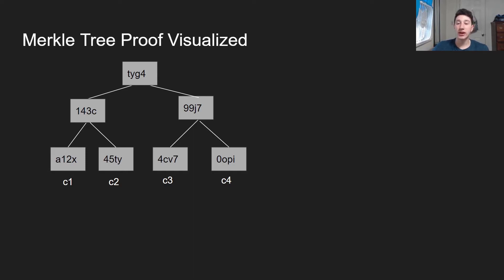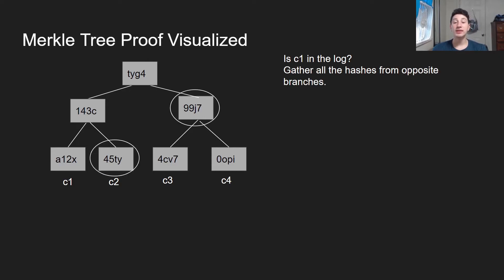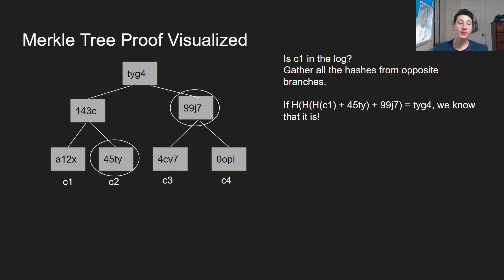So imagine we have these four certificates — C1, C2, C3, C4 — in a Merkle tree. Feel free to go back to my Merkle tree video if you forget what these are. Basically it's just a tree of hashes where each parent node is a hash of its two children. What if we want to ensure that C1 is actually in the tree? What you do is gather only the hashes from opposite branches — in this case that would be 45TY and 99J7 — so we only need log n hashes, which greatly improves the proof time. You then reconstruct the Merkle tree root from those hashes and check if the roots are equal. So basically: take C1, concatenate it with 45TY, take the hash of that — which should be 143C — concatenate that with 99J7, take the hash of that, and if it's equal to TYG4, then we know C1 is in fact in the log.